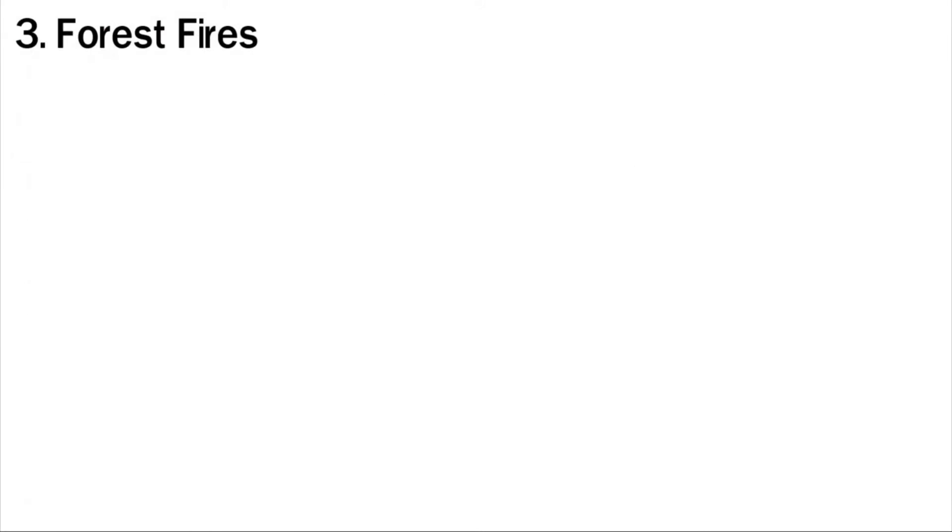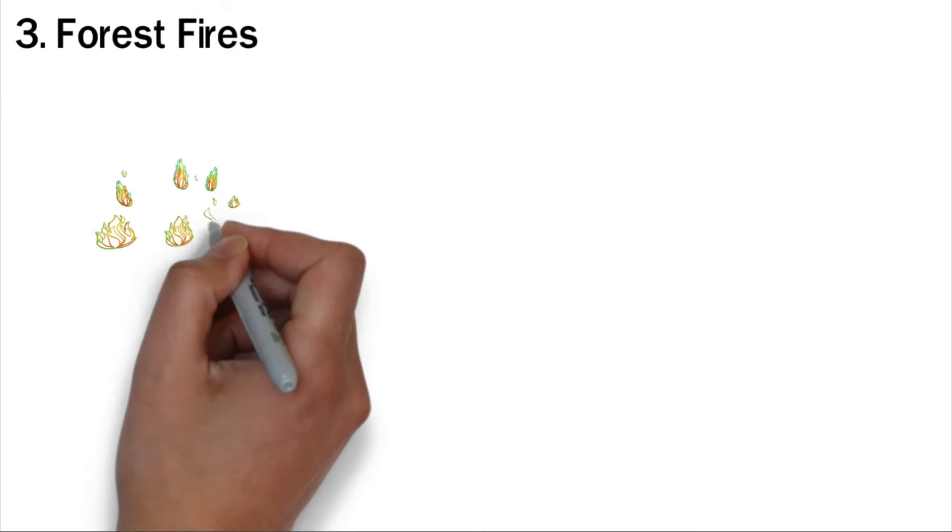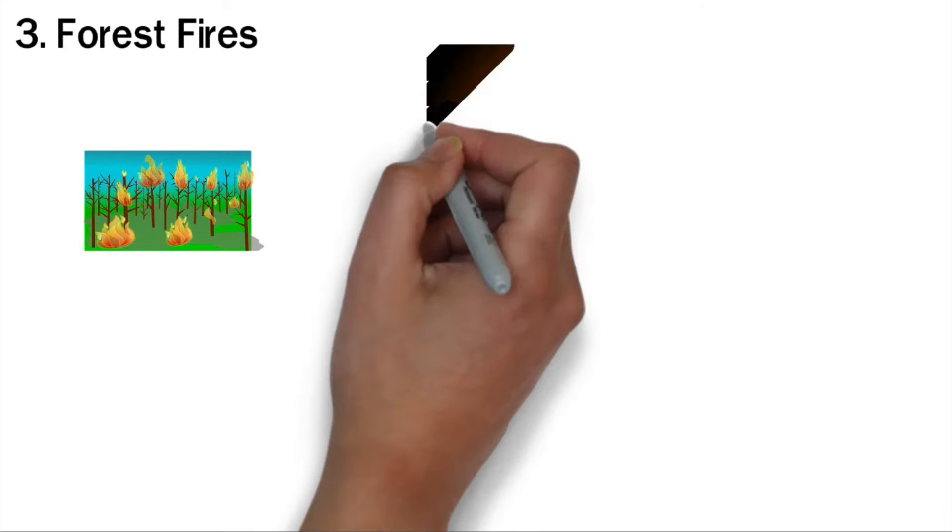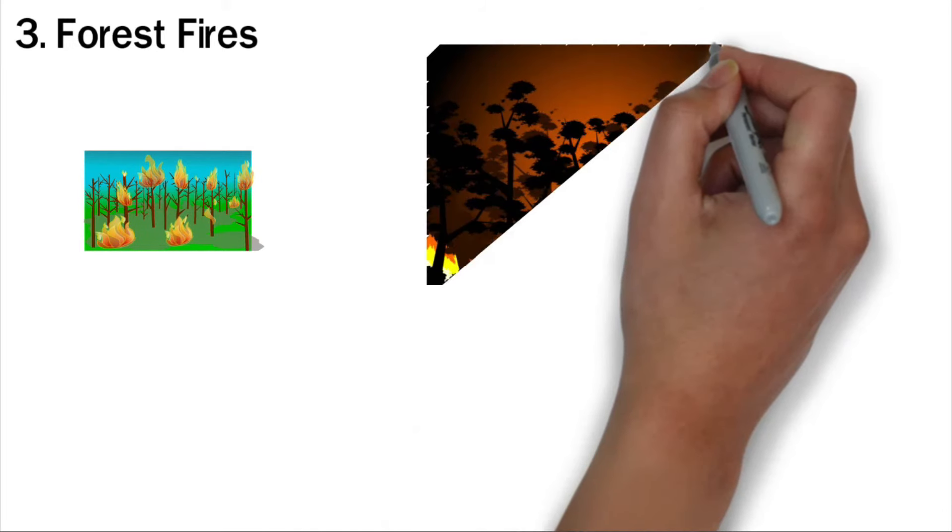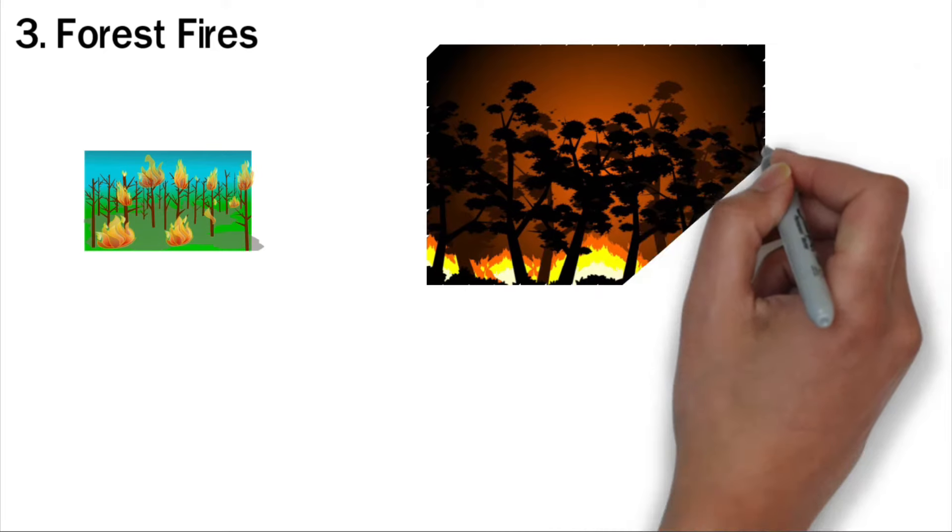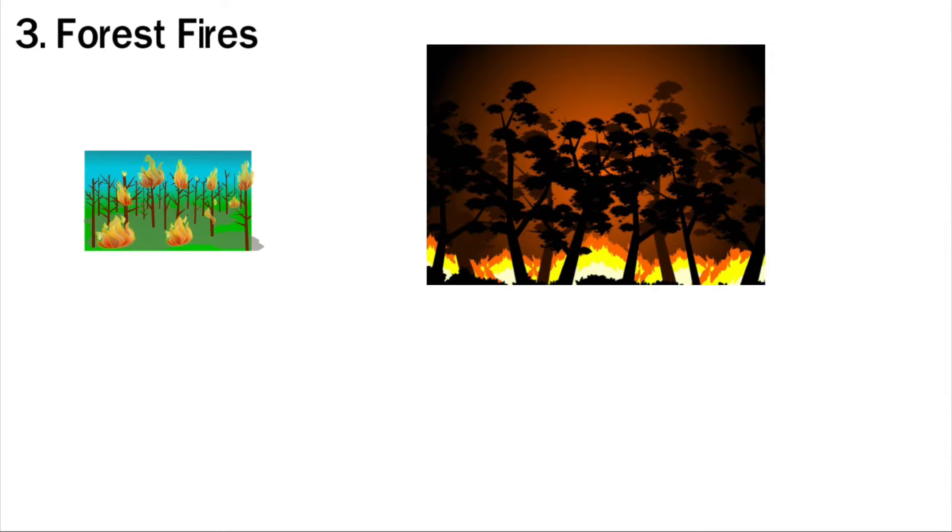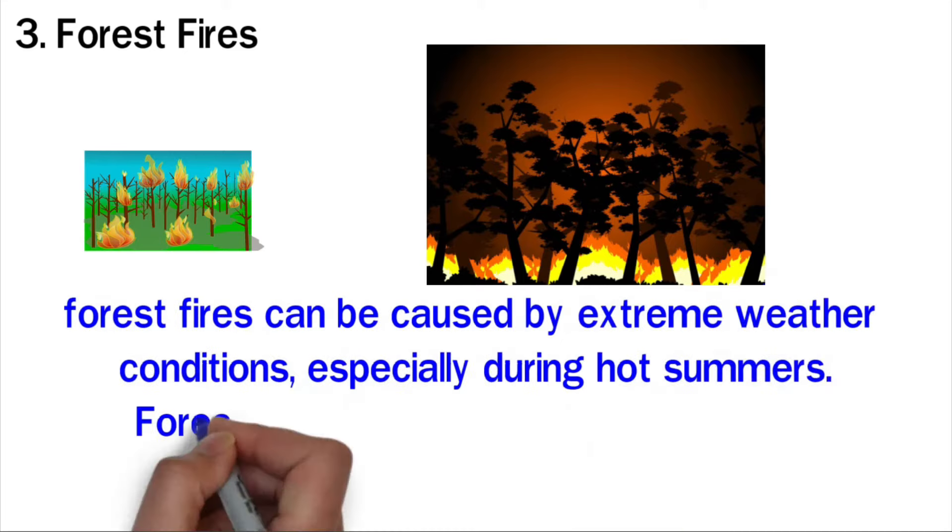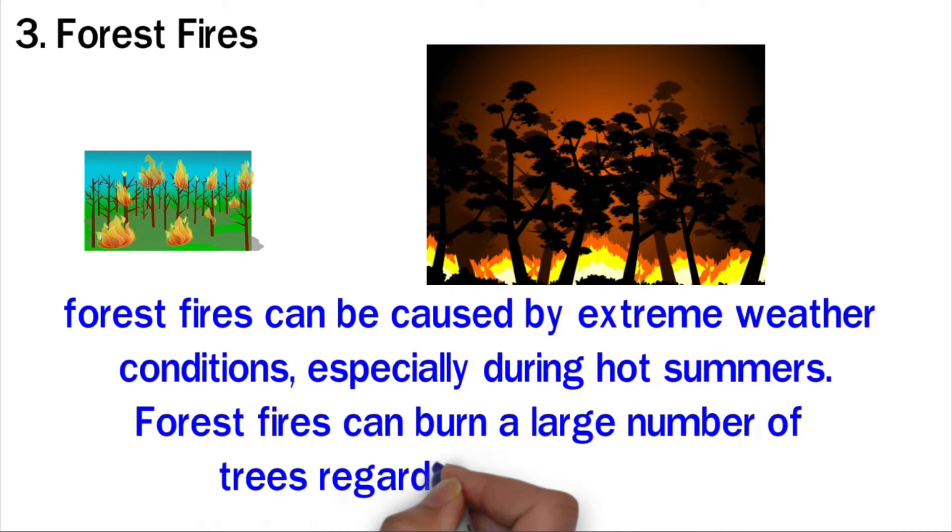Three: Forest fires. Each year the earth loses trees due to forest fires. Forest fires can result from human activities or natural disasters. People often start fires in a small area when clearing land for other activities. If the fire is not controlled, it can spread to forests. Also, forest fires can be caused by extreme weather conditions, especially during hot summers. Forest fires can burn a large number of trees regardless of the cause.